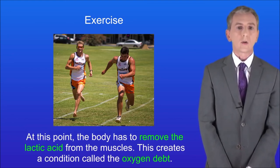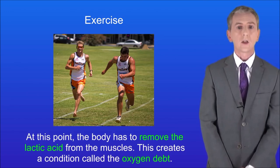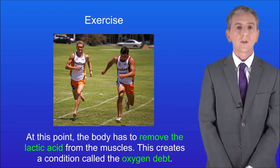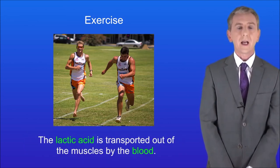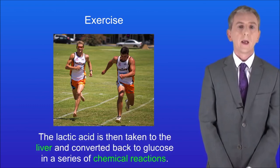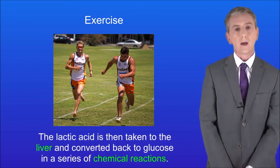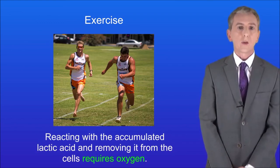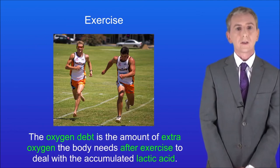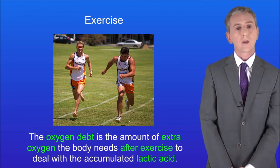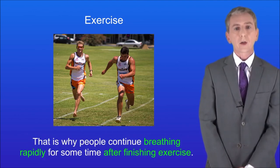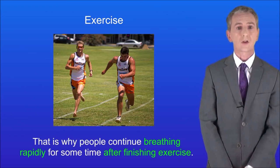During long periods of vigorous activity, lactic acid causes muscles to become fatigued and stop contracting efficiently. The body must remove the lactic acid, creating a condition called the oxygen debt. The lactic acid is transported from the muscles by the blood to the liver, where it's converted back to glucose. Reacting with accumulated lactic acid requires oxygen — so the oxygen debt is the amount of extra oxygen the body needs after exercise to deal with the accumulated lactic acid. That's why people continue breathing rapidly for some time after finishing exercise.